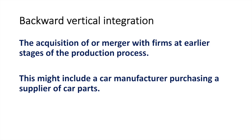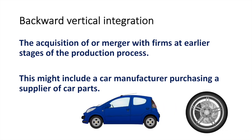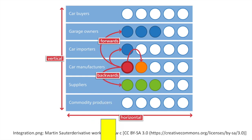Backward vertical integration is the acquisition of or merger with firms at earlier stages of the production process. This might include a car manufacturer purchasing a supplier of car parts — for example, purchasing a vehicle rim producer. A car manufacturer may purchase a supplier of a variety of parts including paneling, electronics, airbags or rims. The key thing to remember is that the integration is at an earlier stage of the production process.